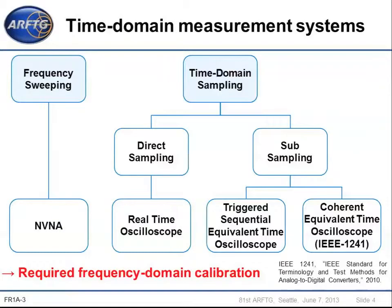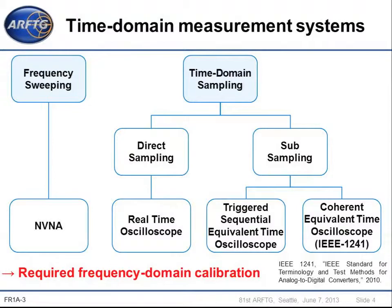There are two main operating principles of time domain measurement systems. The first principle is frequency sweeping, used in mixer-based systems such as MVNA. These systems are able to measure time domain waveforms with limited calibrated bandwidths around the carrier and multiple frequencies. The other operating principle is time domain sampling, which can be direct sampling or subsampling. Real-time oscilloscopes use the direct sampling principle but are limited in dynamic range due to the trade-off between sampling speed and dynamic. The subsampling principle is used in triggered sequential equivalent time oscilloscopes, which can achieve high dynamic range but are limited in memory depth due to problems related to the use of a trigger.